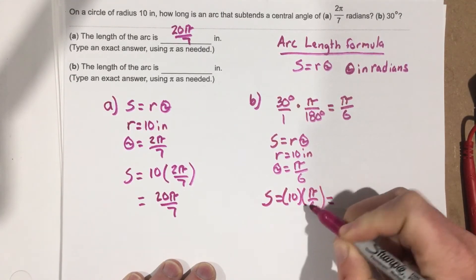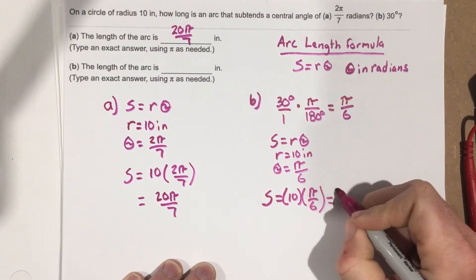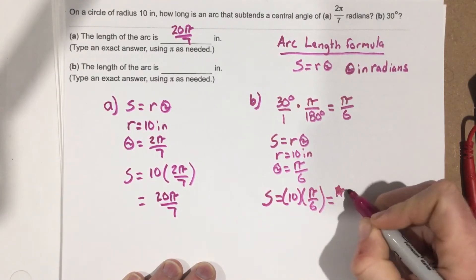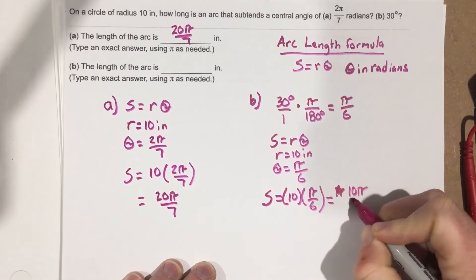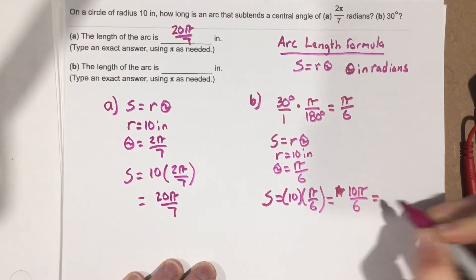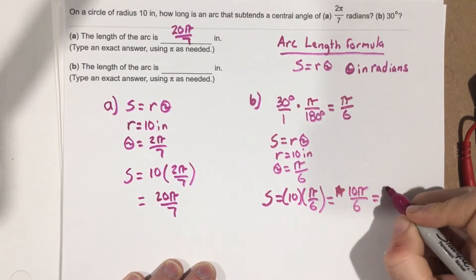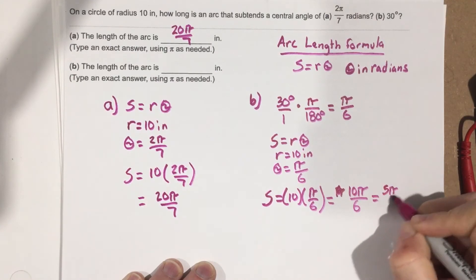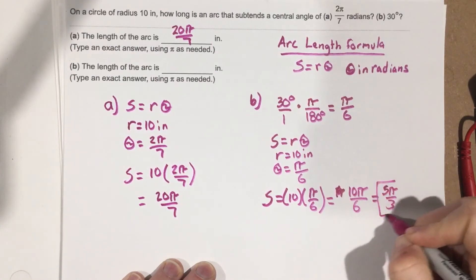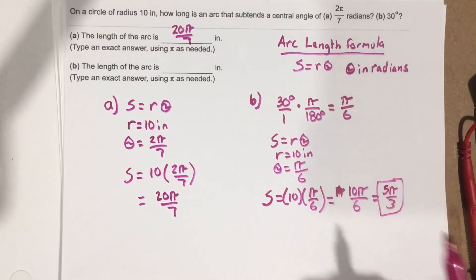We'll plug in the two things we know. So we end up with S equals 10 times π over 6, which gives you, if we write it as 10π over 6, that can reduce to, we'll divide them both by 2, you get 5π over 3 for the arc length with an angle of 30.